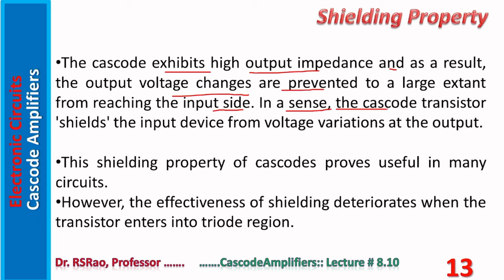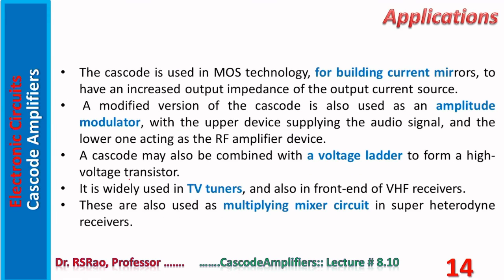In a sense, the cascode transistor shields the input device from voltage variations at the output. This shielding property of cascodes proves useful in many circuits. However, the effectiveness of shielding deteriorates when the transistor enters into the triode region — this aspect must be kept in mind.